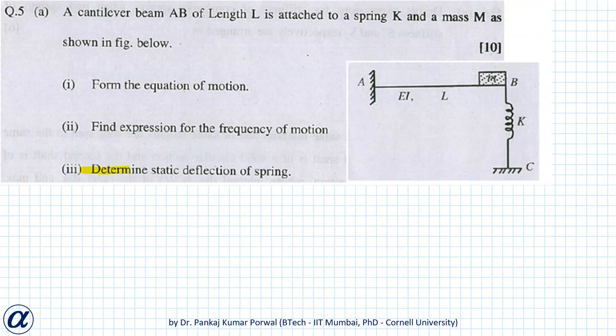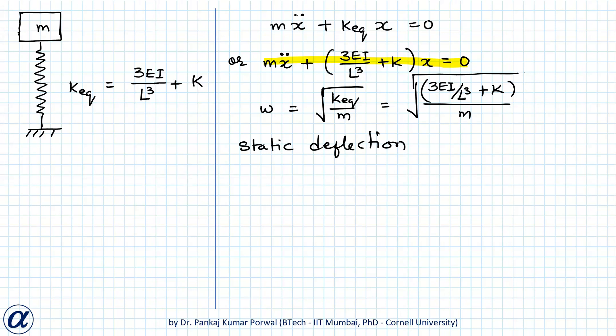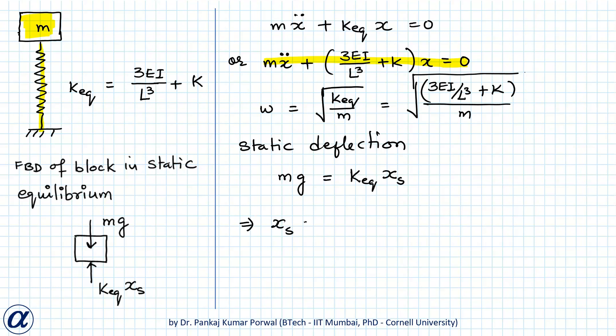Next, we want to find the static deflection of spring, and that will be equal to the equilibrium displacement of the mass. We can find this using the equilibrium equation: Mg equals K equivalent X static. So that gives us X static equals Mg upon K equivalent, or Mg upon 3EI upon L cube plus K.